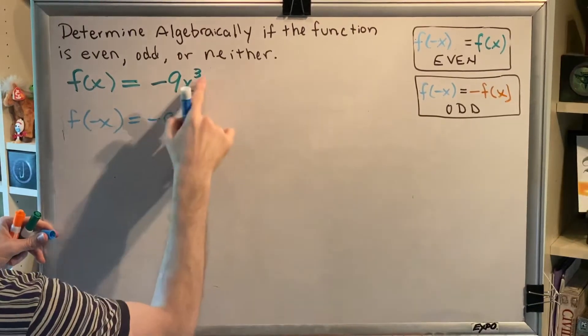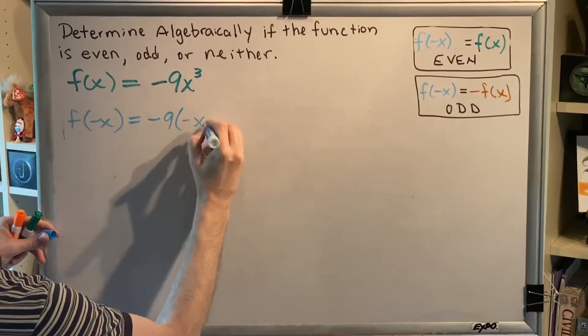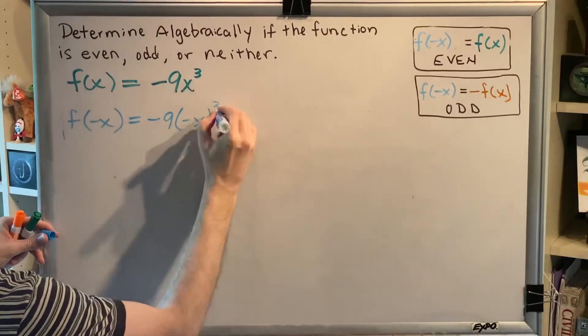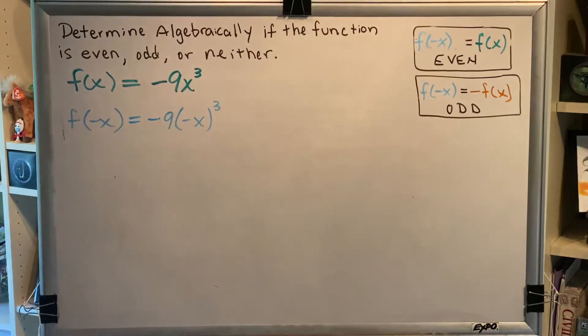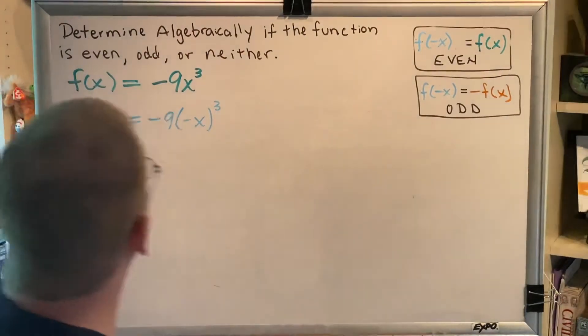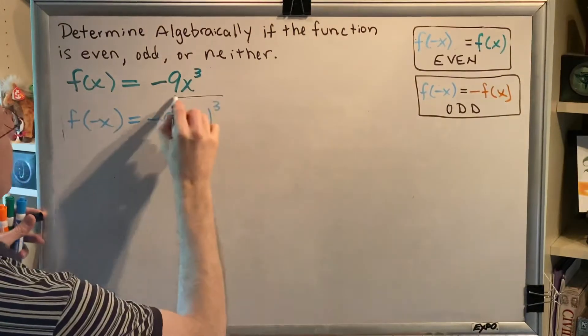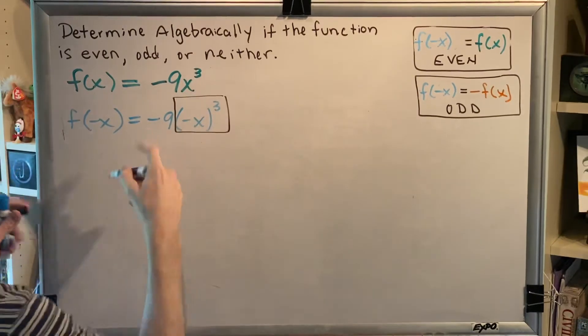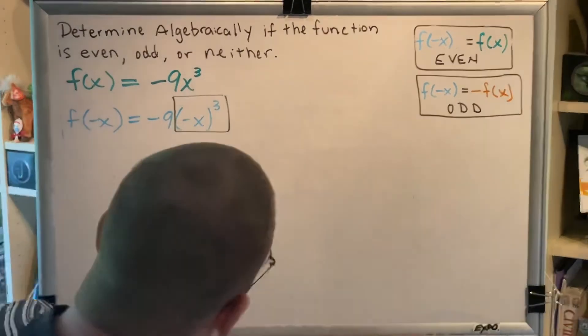In this case, we have both a multiplier and an exponent. So we need to put the negative x in parentheses. Now we're going to simplify, and we're going to follow order of operations. Order of operations says exponents happen before multiplication.